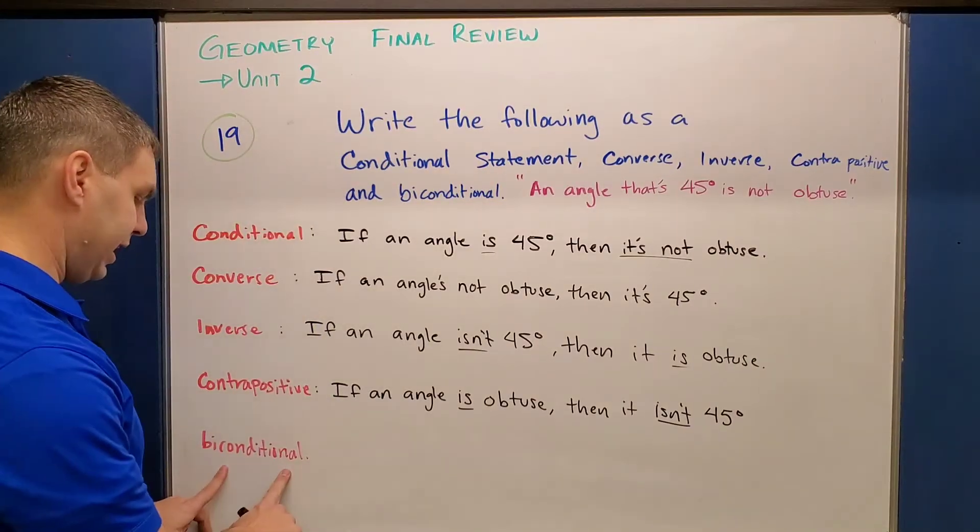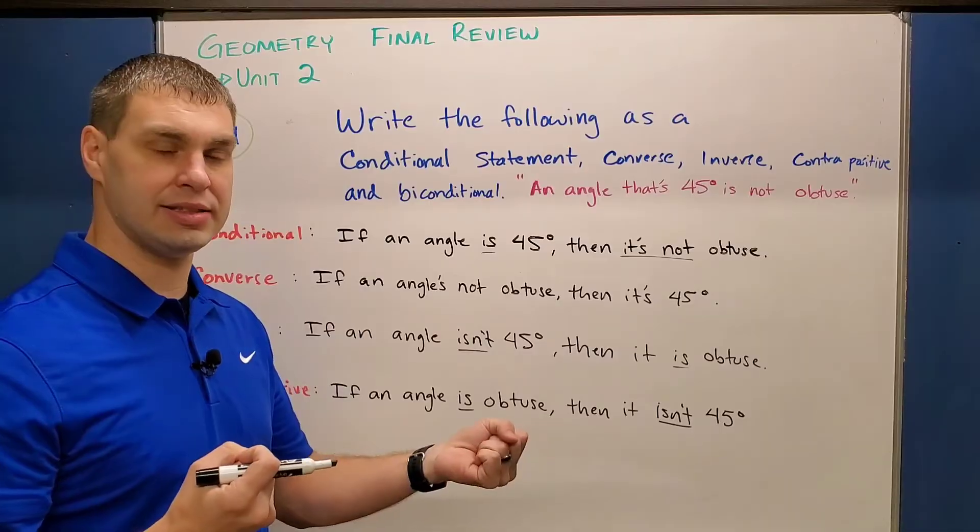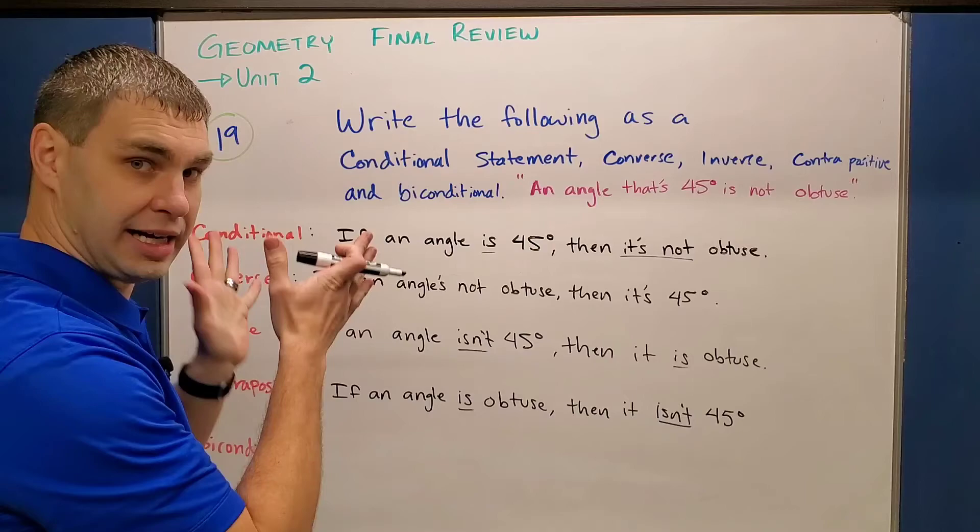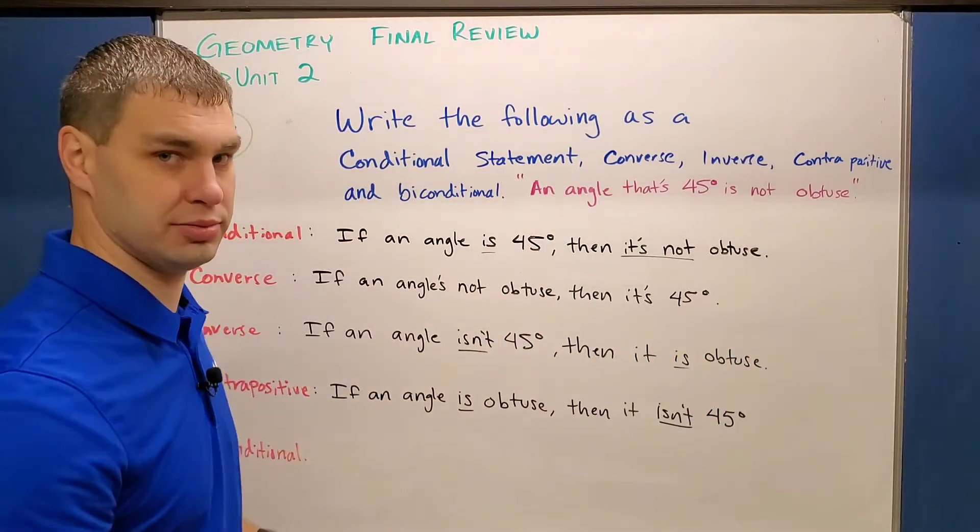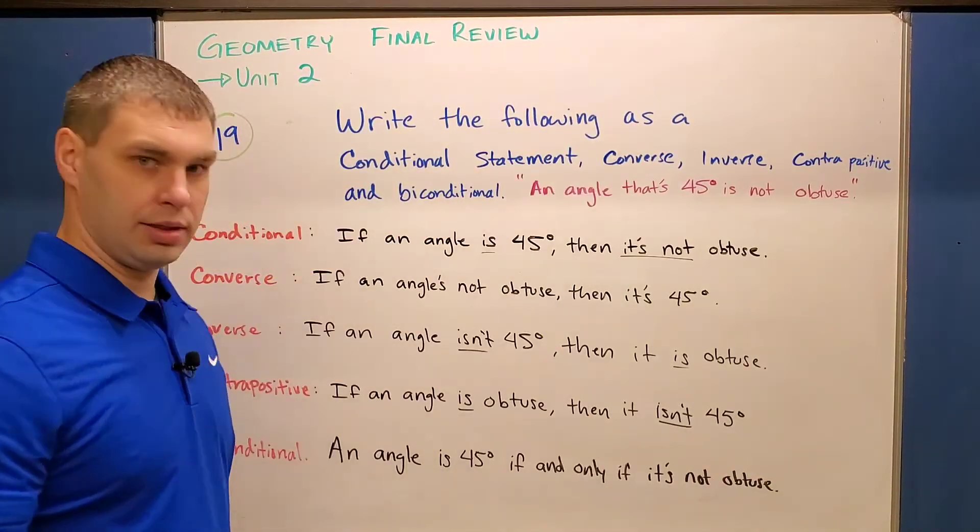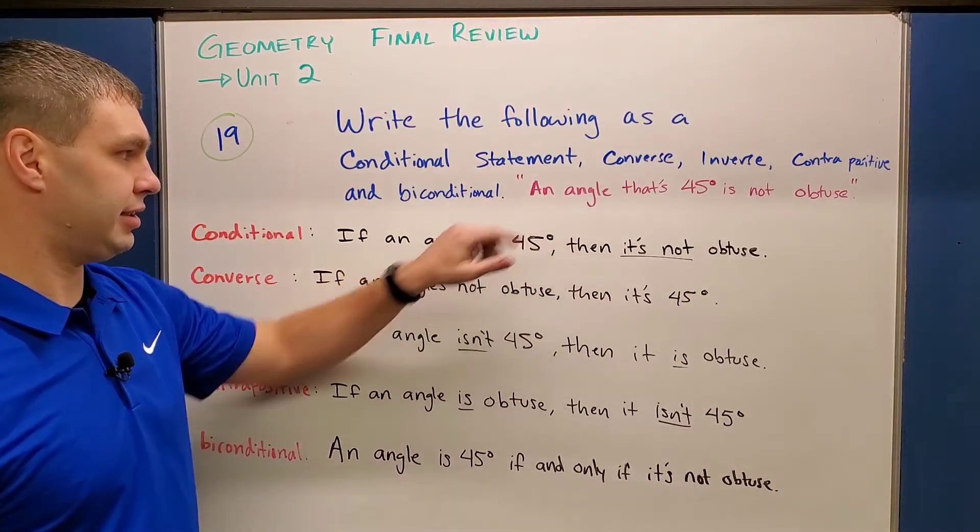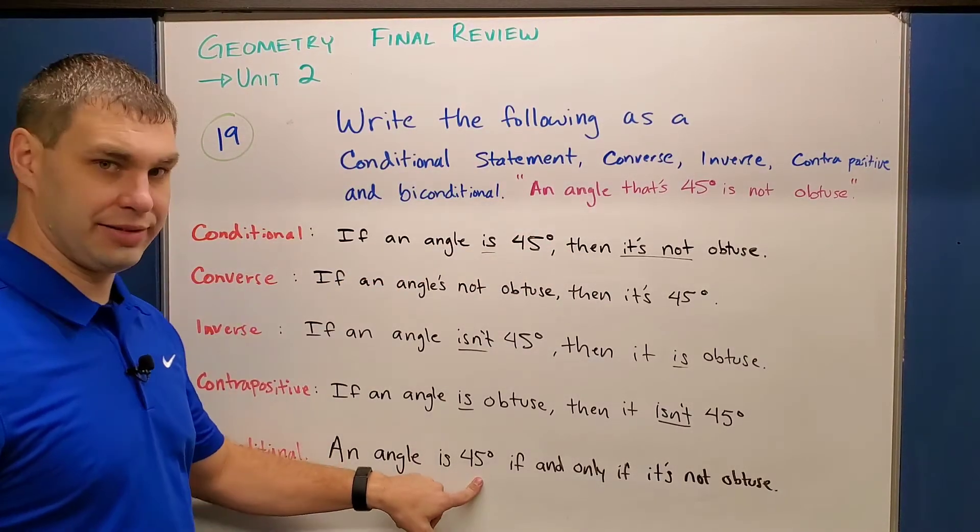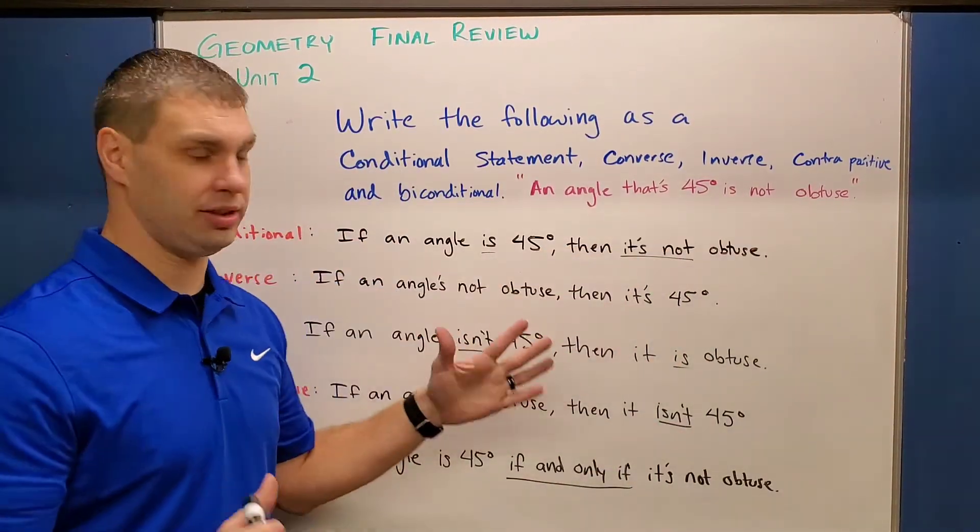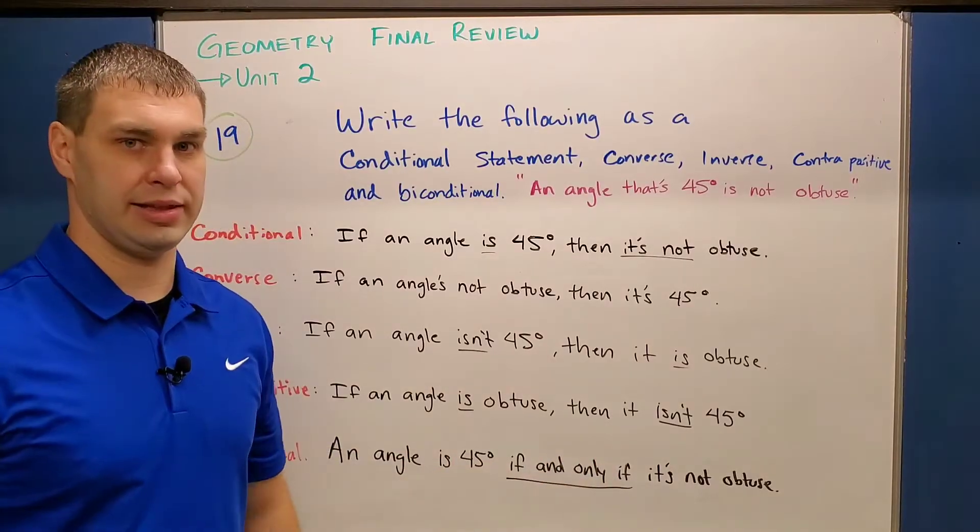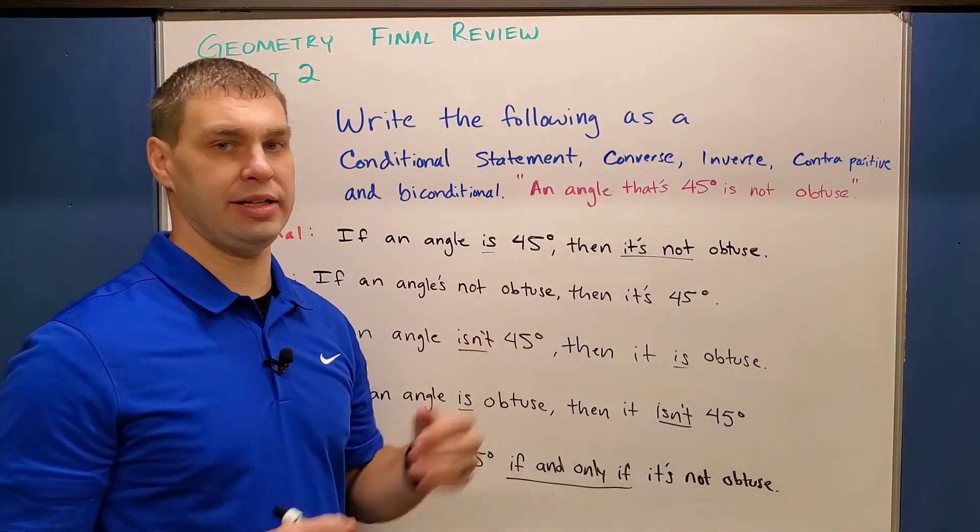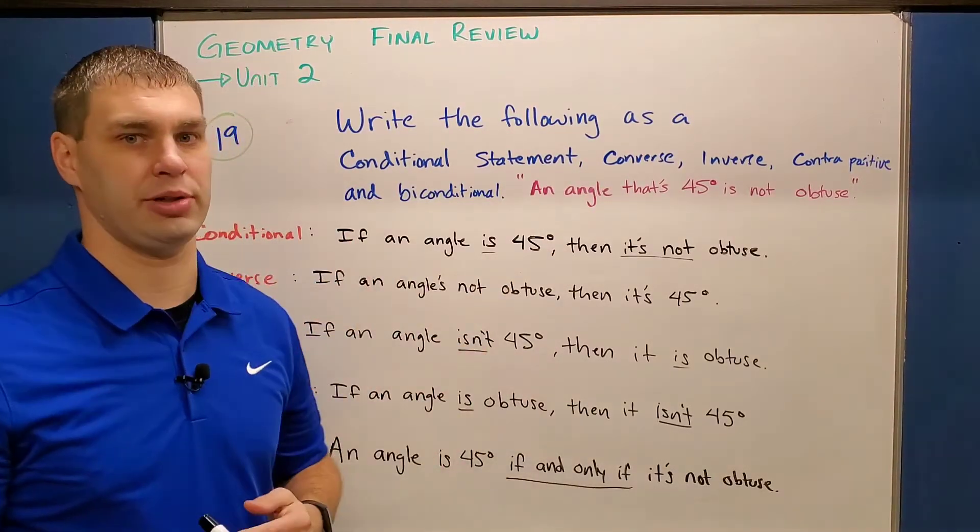The last part is called the biconditional. What this does is it takes away the ifs and the thens, and it replaces it in the middle with the phrase if and only if. So I'm going to take my hypothesis, if and only if my conclusion. So again, I went back to my original here that says an angle is 45 degrees, and then my new phrase for the biconditional, if and only if it's not obtuse. So the only thing I did is I put that phrase if and only if right there in the middle. If you need more practice with this or more examples, I have a video up here that I'll link. Go ahead and watch that if these seem a little tricky for you.